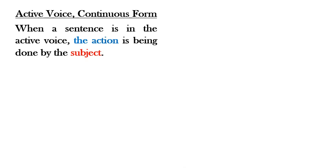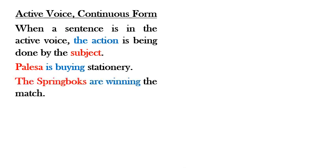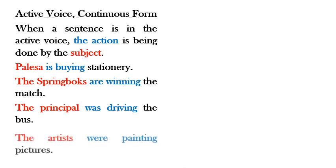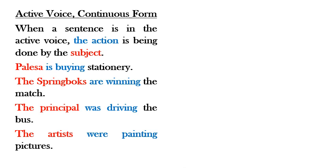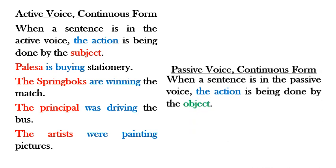Now we look at the continuous form of the sentence. The action is being done by the subject, but it is something currently in progress. Examples: 'Palasa is buying stationery' — present tense, continuous form. 'The Springboks are winning the match' — it's in progress. 'The principal was driving the bus' and 'The artists were painting pictures.' Notice the '-ing' suffix on the end of the verb.